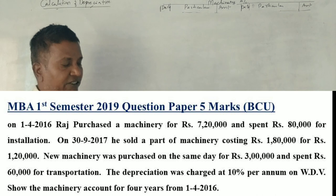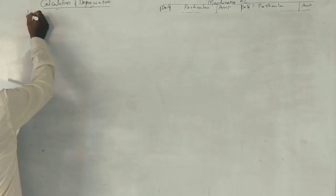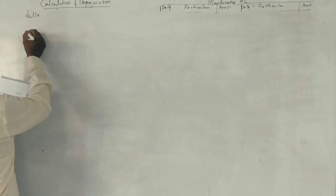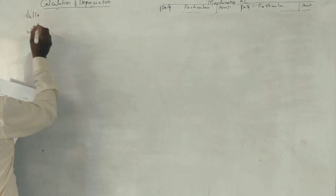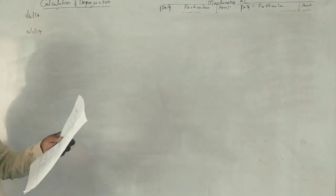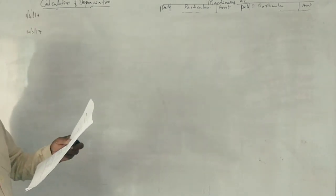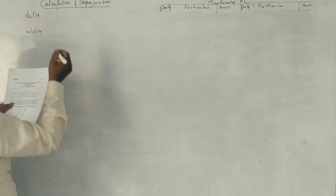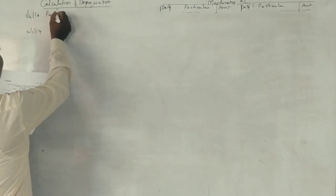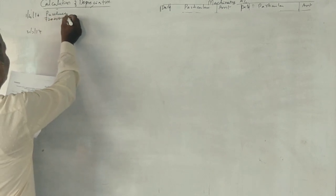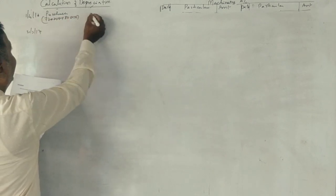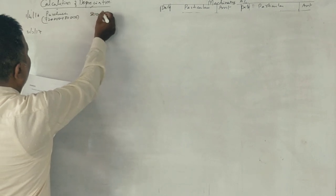On 30th September 2017 - September 2017. 1st April 2016 purchase date, correct? This is the purchase. $720,000 and $80,000 installation. What is the total? $800,000 purchase. And what is the date for depreciation?